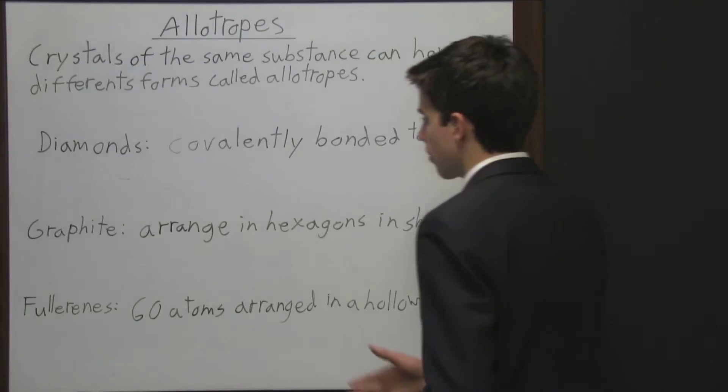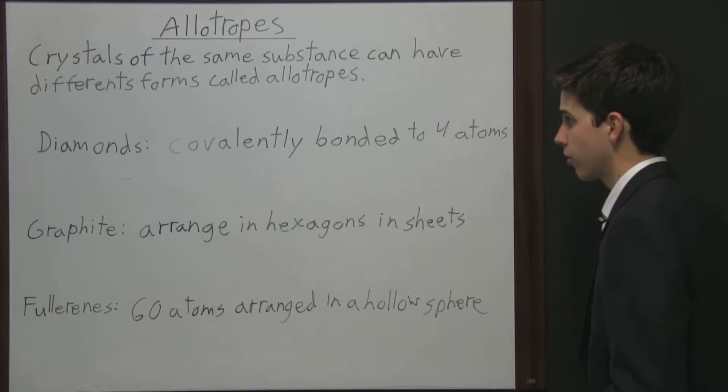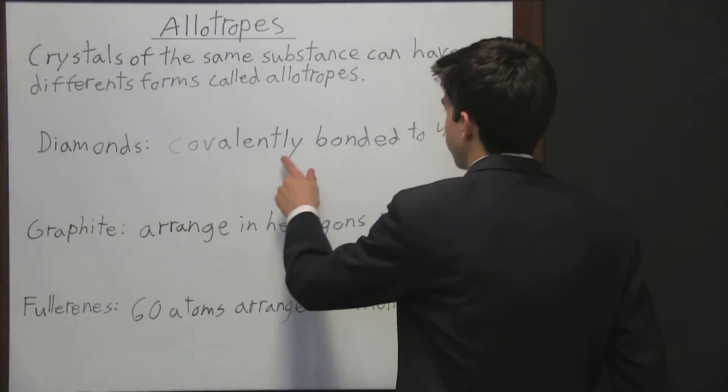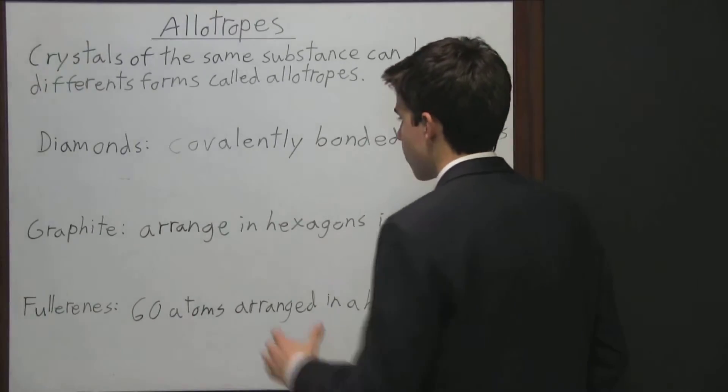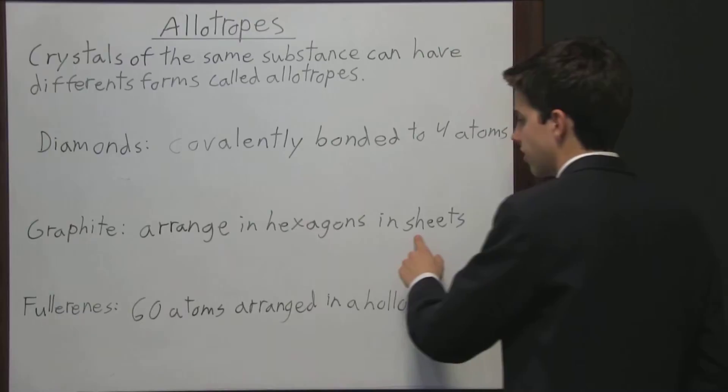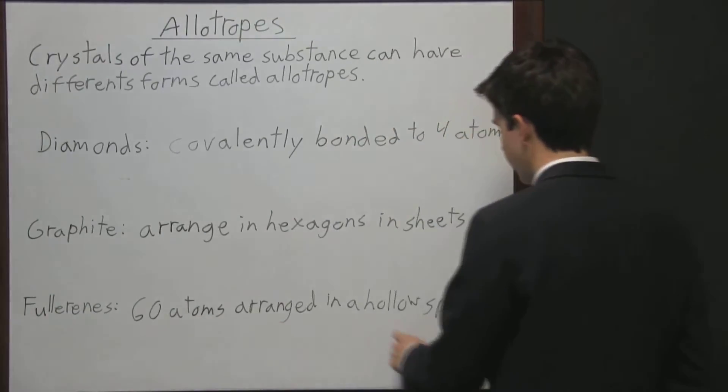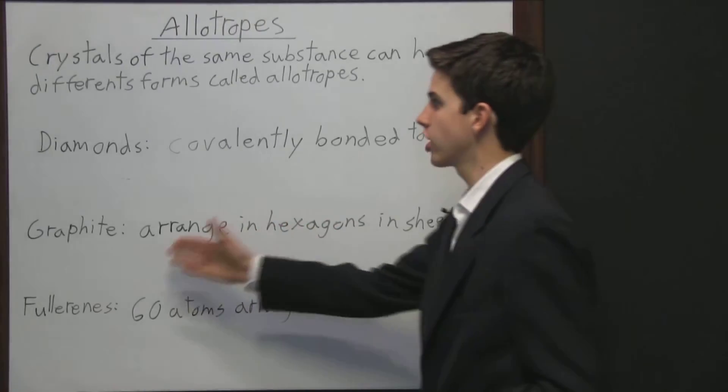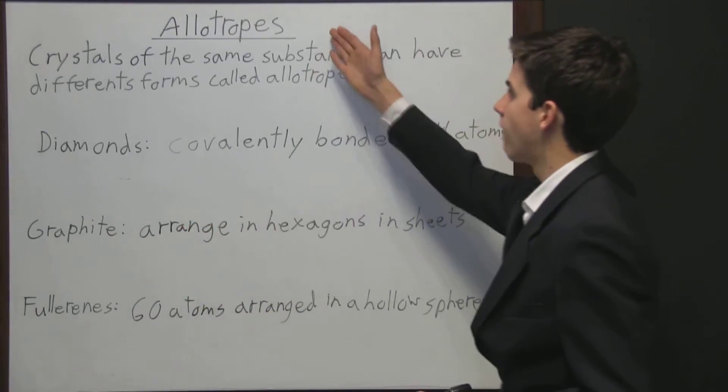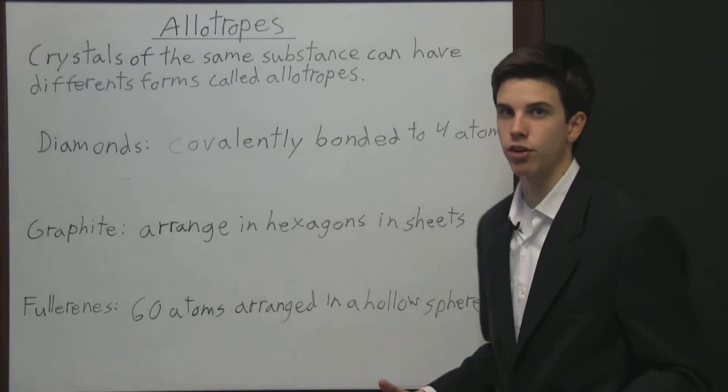So these are all made up of carbon atoms. I didn't write it in all the descriptions here but that's the atoms we're dealing with here. These are carbon atoms that are covalently bonded to four neighboring carbon atoms. Graphite is when carbon atoms are arranged in hexagons that are arranged in sheets. And this new substance is 60 carbon atoms arranged in a hollow sphere. So this is all made up of carbon but we have three different substances, and that's because of allotropes. And that's when crystals of the same substance can have different forms.